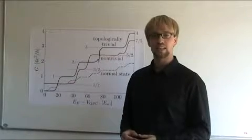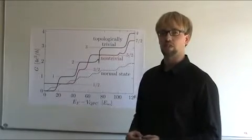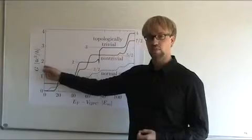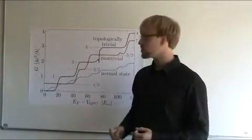In the following, I will explain the signature of the Majorana fermions using results from a representative simulation. This plot shows the conductance of the point contact as a function of the gate potential applied to it.